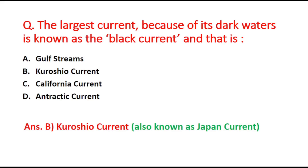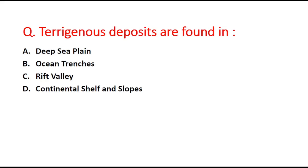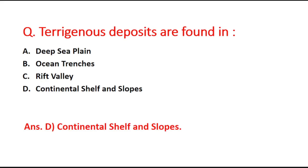Next question: Pelagic deposits are found in — option A is the deep sea plain, B is ocean trenches, C is rift valleys, and D is continental shelf and slopes. The right answer is option D, continental shelf and slopes.